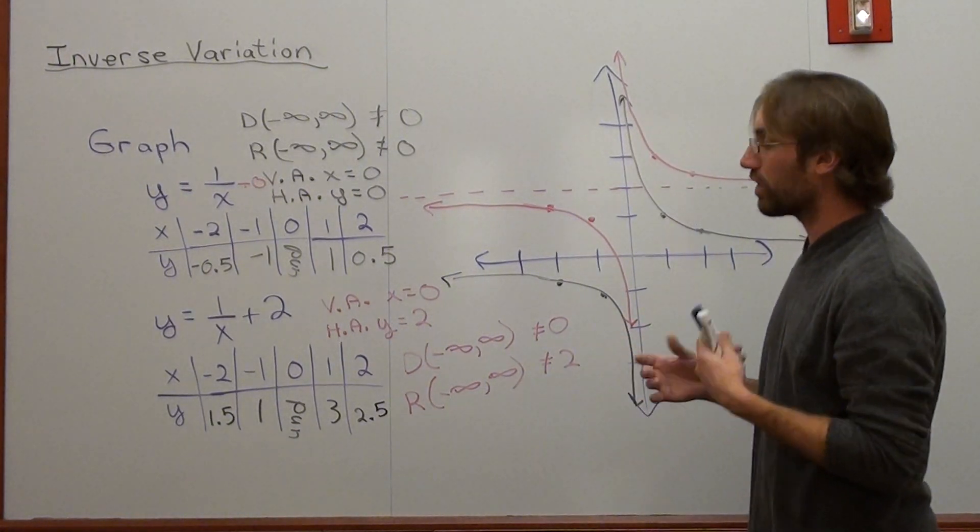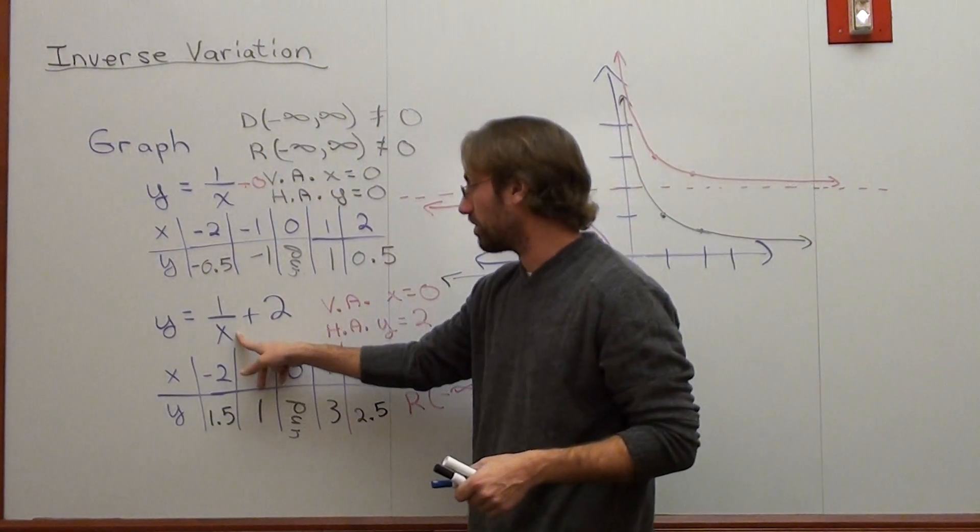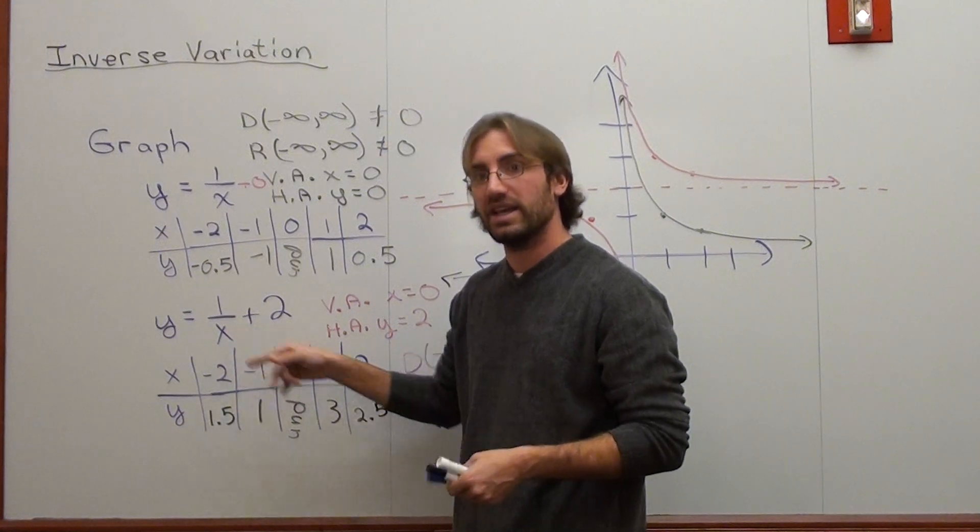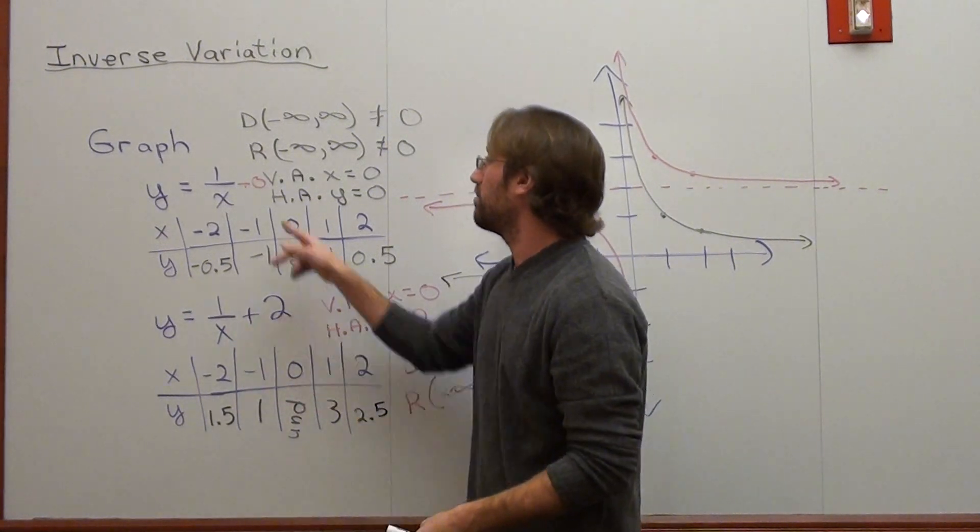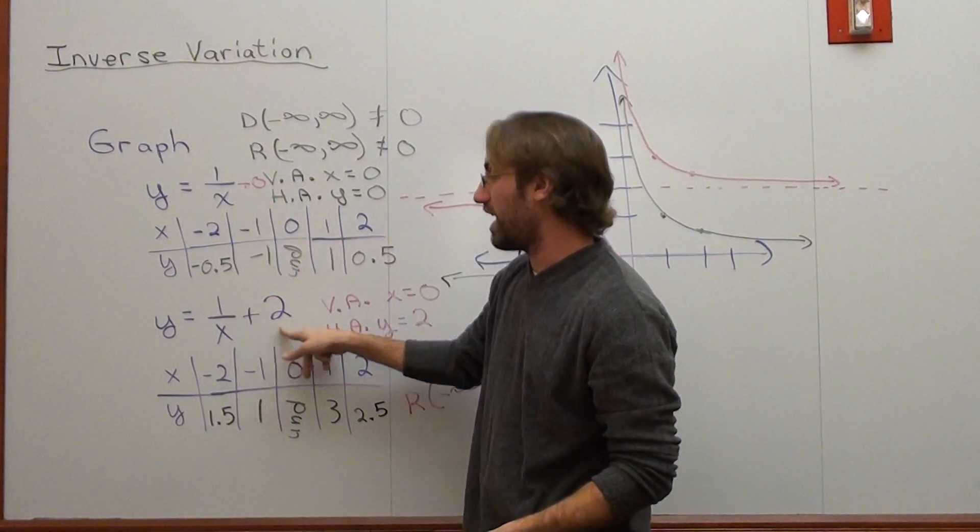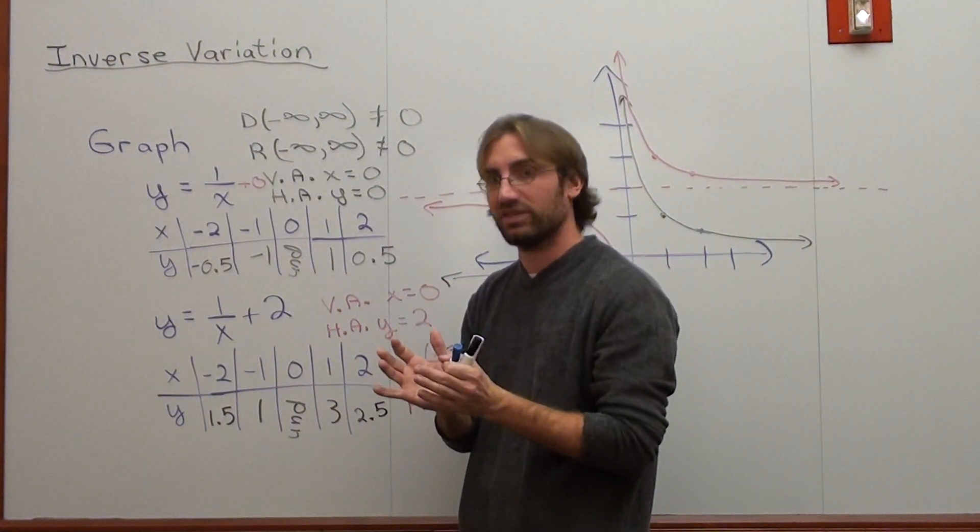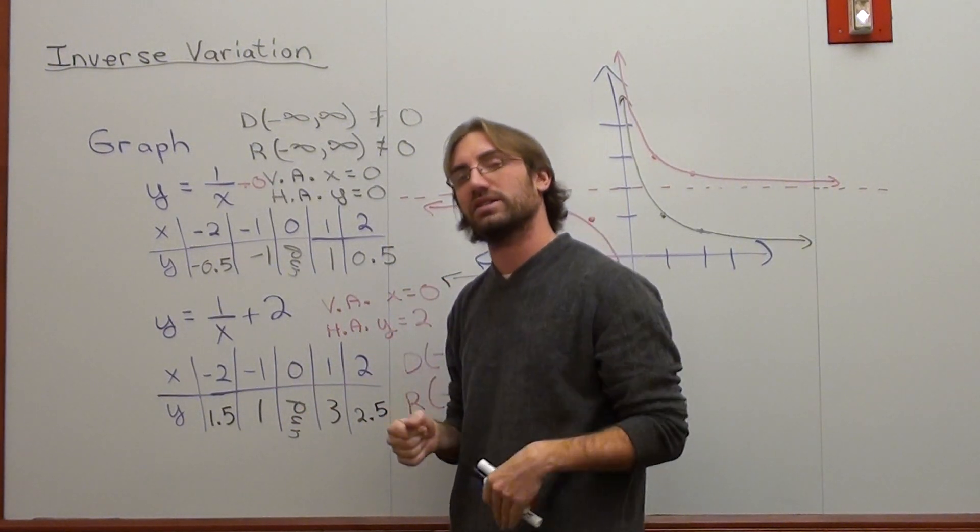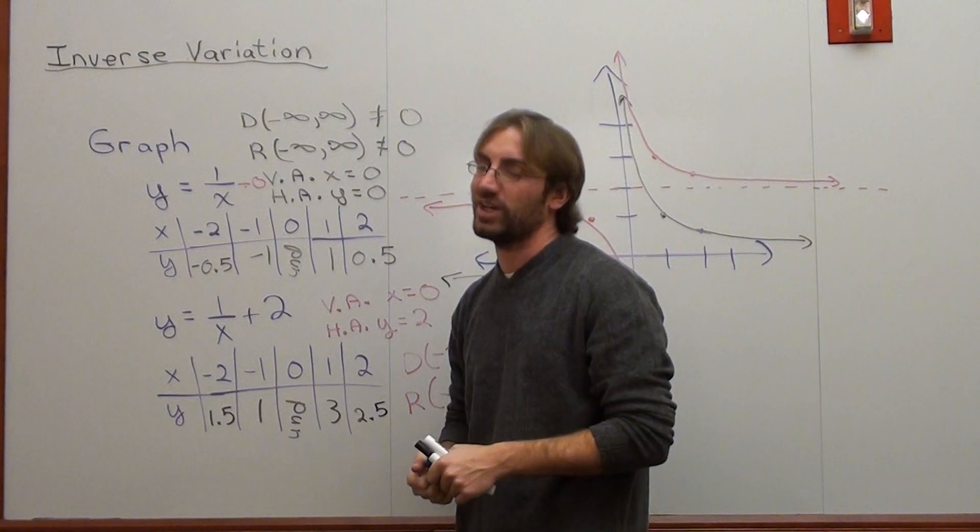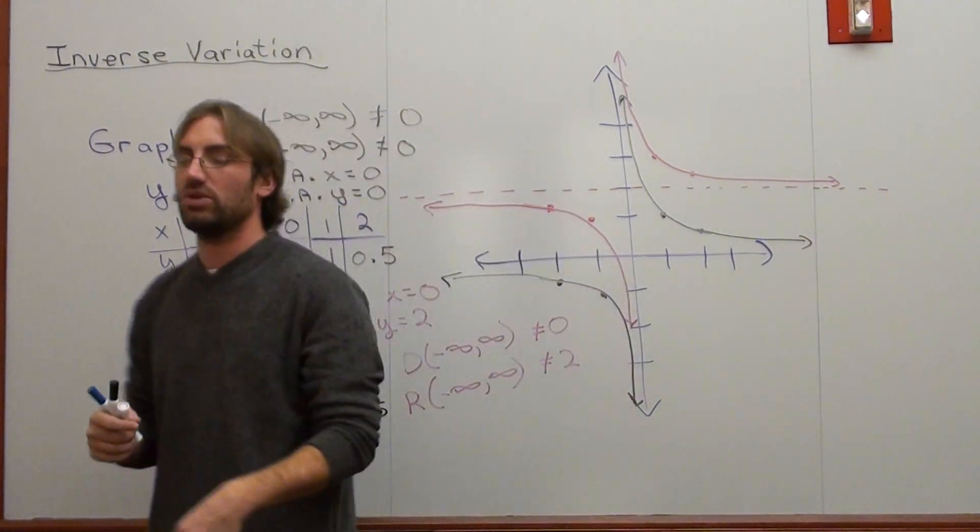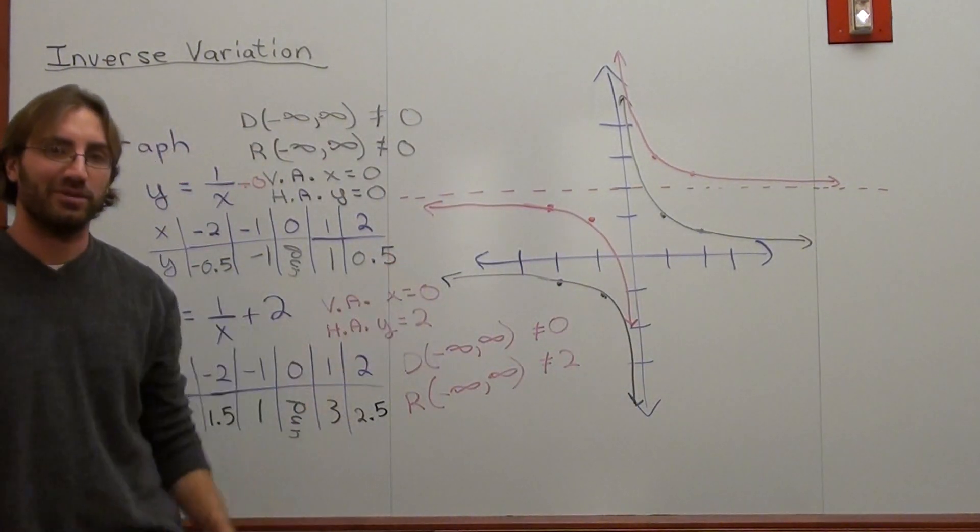But pretty cool. So what we're going to do next is put a value, adding or subtracting, with the x, and see how that affects the graph. But this value right here, when you add something to the 1 over x afterwards, affects its horizontal asymptote and its range. So I hope that was helpful. We'll continue along. But for right now, have a great day. Goodbye.